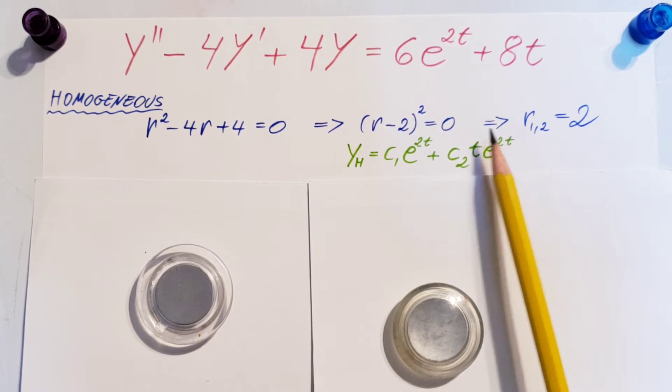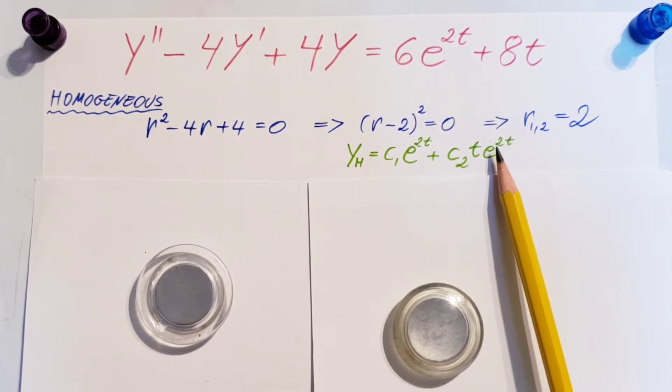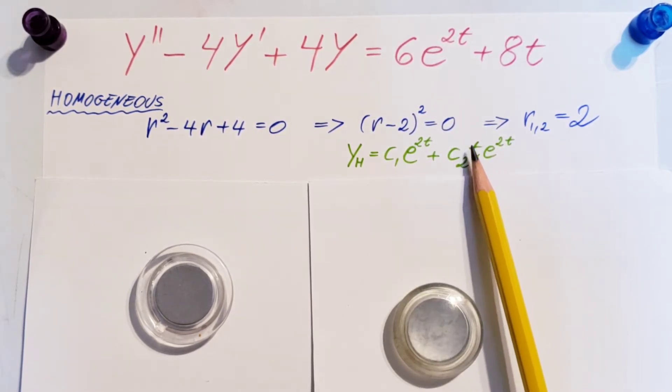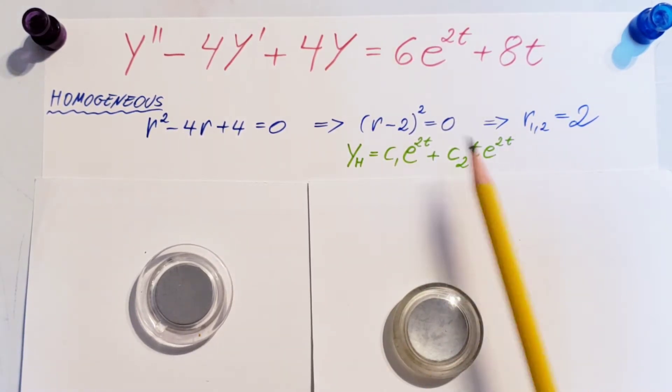The second 2 comes right here, but since this part would be exactly the same as this one, we need to remember to include a t right here. That's how we got that part. This is our homogeneous solution.